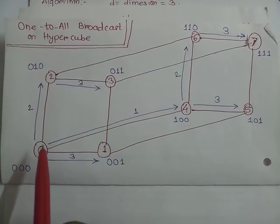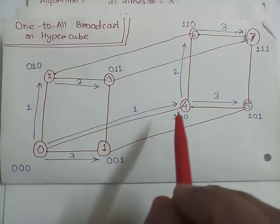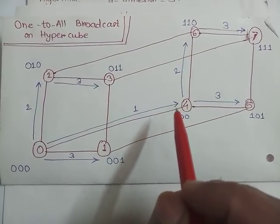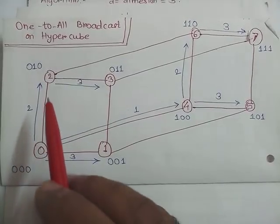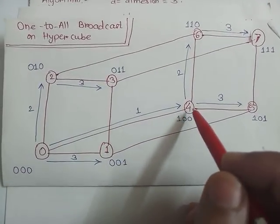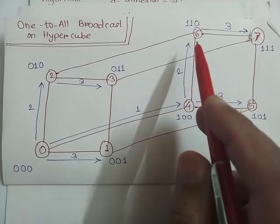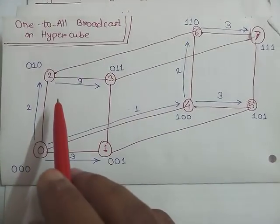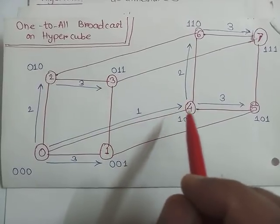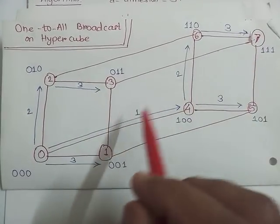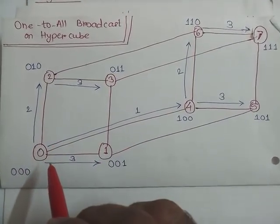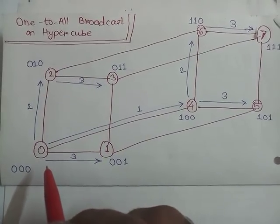So in first step, node 0 transfers message to node 4. Then node 0 and node 4 both become source of message. In second step, node 0 transfers to node 2, node 4 transfers to node 6. And in third step, 0 to 1, 2 to 3, 4 to 5, and 3 to 7. So in 3 steps we find that all other nodes are having message which was there at node 0 initially.